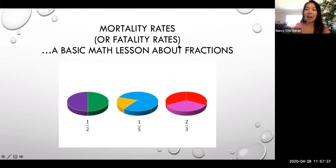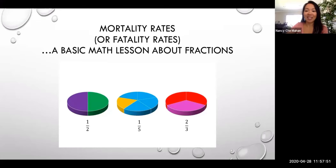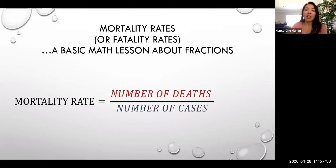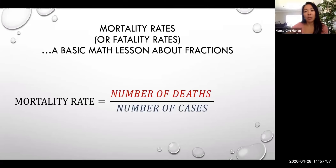Rates are fractions where it consists of a part and a whole. It's a fraction that is converted to a decimal, and a decimal is then converted to a percentage. And that's where we get the percentages that we hear about every single day. So when we talk about the mortality or fatality rates of COVID-19, it's a fraction, and the fraction is the number of deaths over the number of cases.